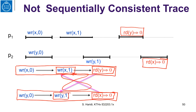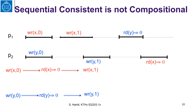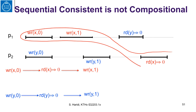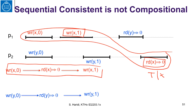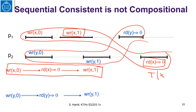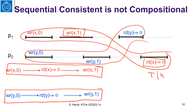This is quite interesting because that execution is actually sequentially consistent if we restrict to a single register. Looking at this register X, the trace restricted to X is sequentially consistent — we can place the read before the write. The same is true when restricting to Y; that is also sequentially consistent. So even though the composition is not sequentially consistent, separate views for each register are sequentially consistent.